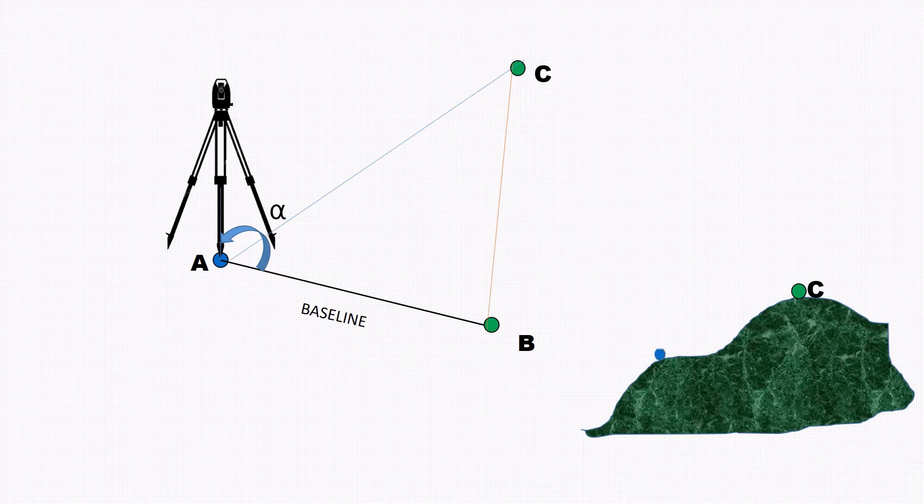After the measurements, the slope distances are converted into horizontal distances. As we know, the surveying is conducted on an undulated topography. So, whatever be the inclined length that we obtain from the instrument, we need to convert that into a horizontal distance.